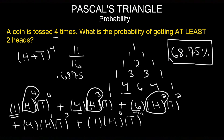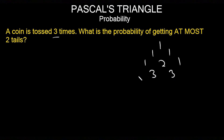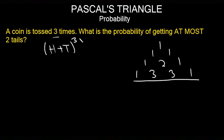That is much easier than creating a list and guessing to make sure you didn't miss any possibilities. Let's try the next example: a coin is tossed three times — what is the probability of getting at most two tails? Since it's 'at most two,' you cannot go over two. We'll draw out Pascal's triangle expanded to the third power, because the total is three. Writing it out: 1, 1, 1, then 1, 2, 1, then 1, 3, 3, 1. We'll write (h + t) to the third power.